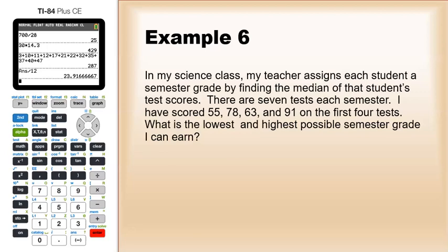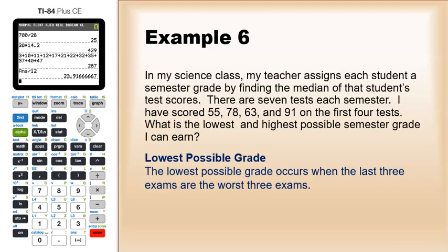Well, there are four tests so there are three more tests. If you want to figure out the lowest, let's just suppose that you got zeros on everything. So the lowest possible grade occurs when the last three exams are your worst three. So just make up something - just say zeros. That would give you 0, 0, 0, 55, 63, 78, 93. That 55 would be the median. So at this point, the worst possible grade you can get is a 55.